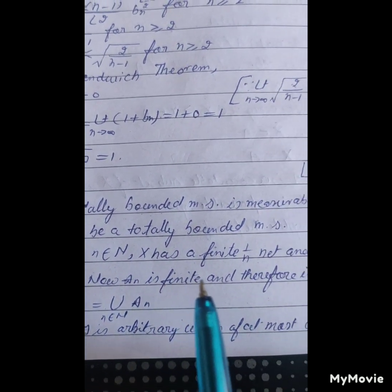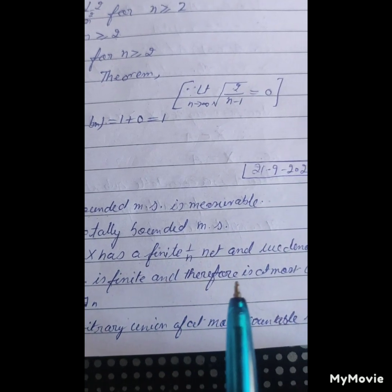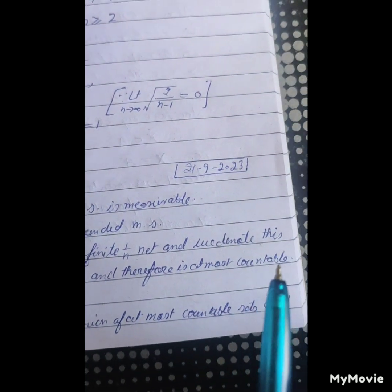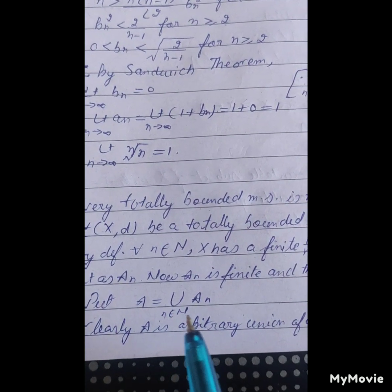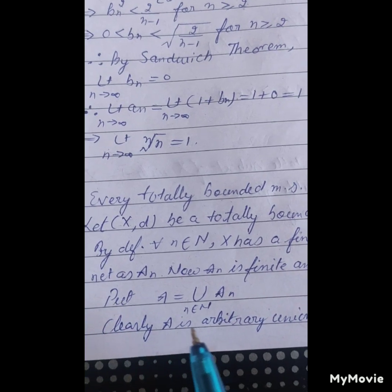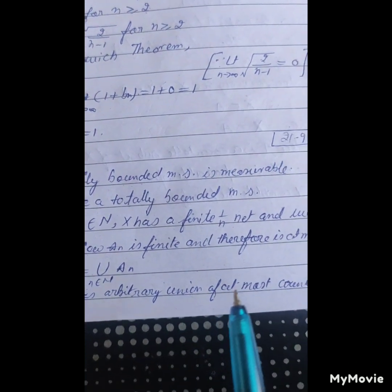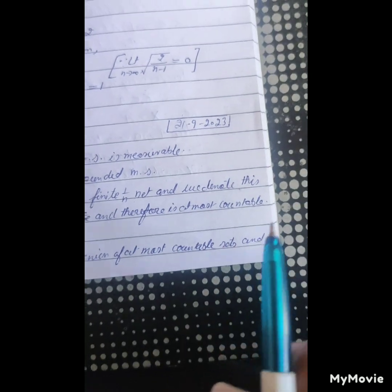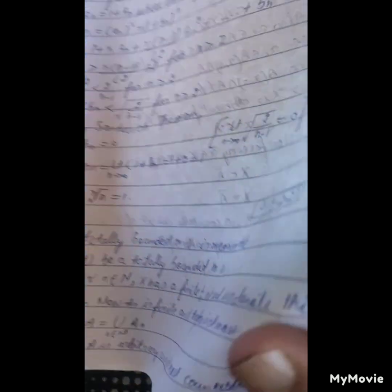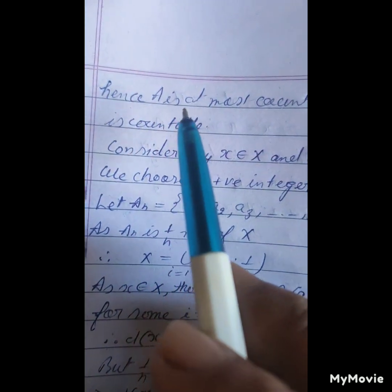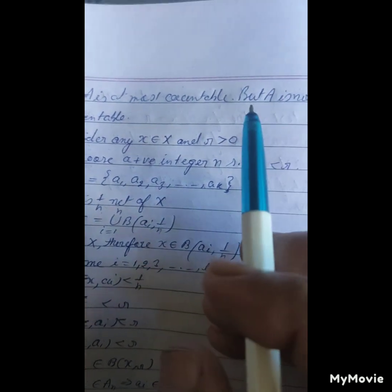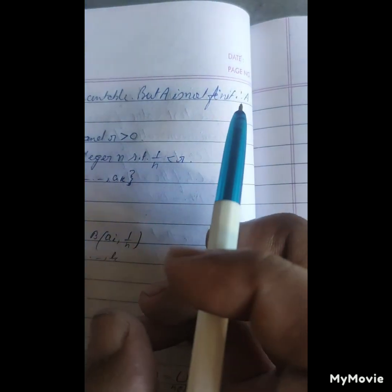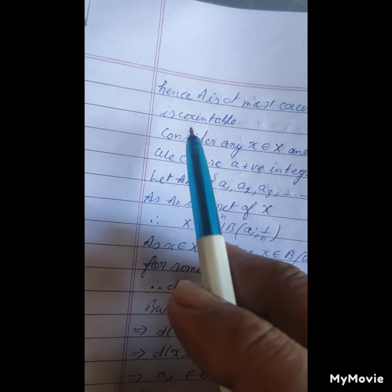Now A_n is finite and therefore is at most countable. Putting A is equal to union of n belongs to capital N of A_n, clearly A is arbitrary union of at most countable sets, and hence A is at most countable. But A is not finite, so A is countable.